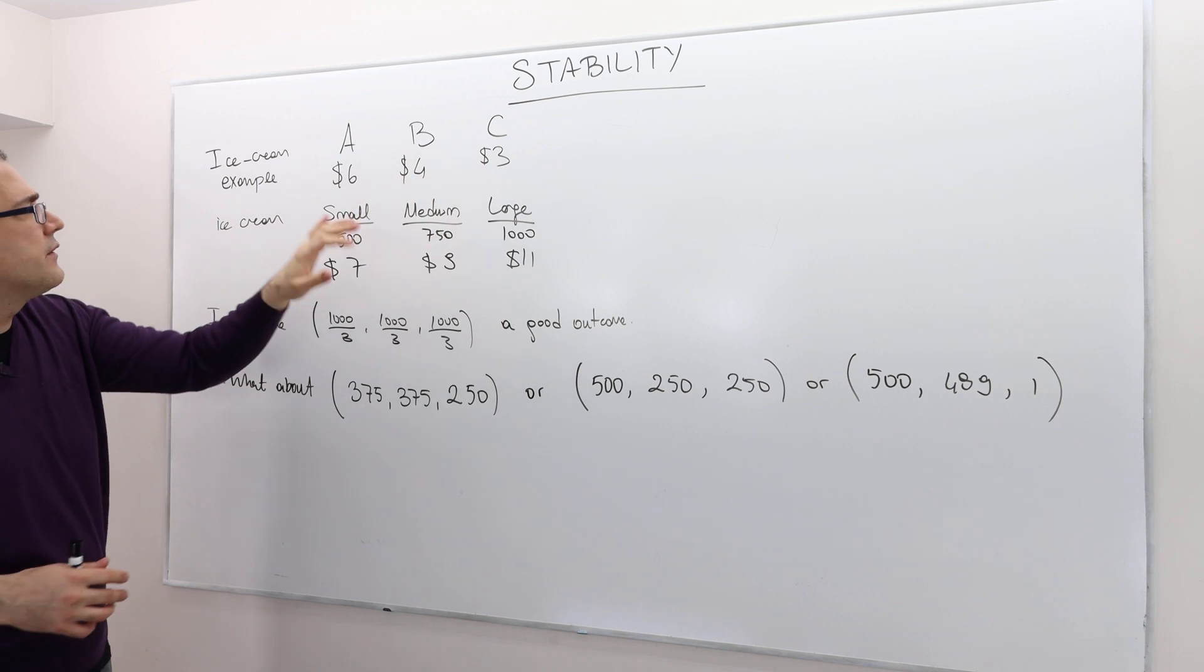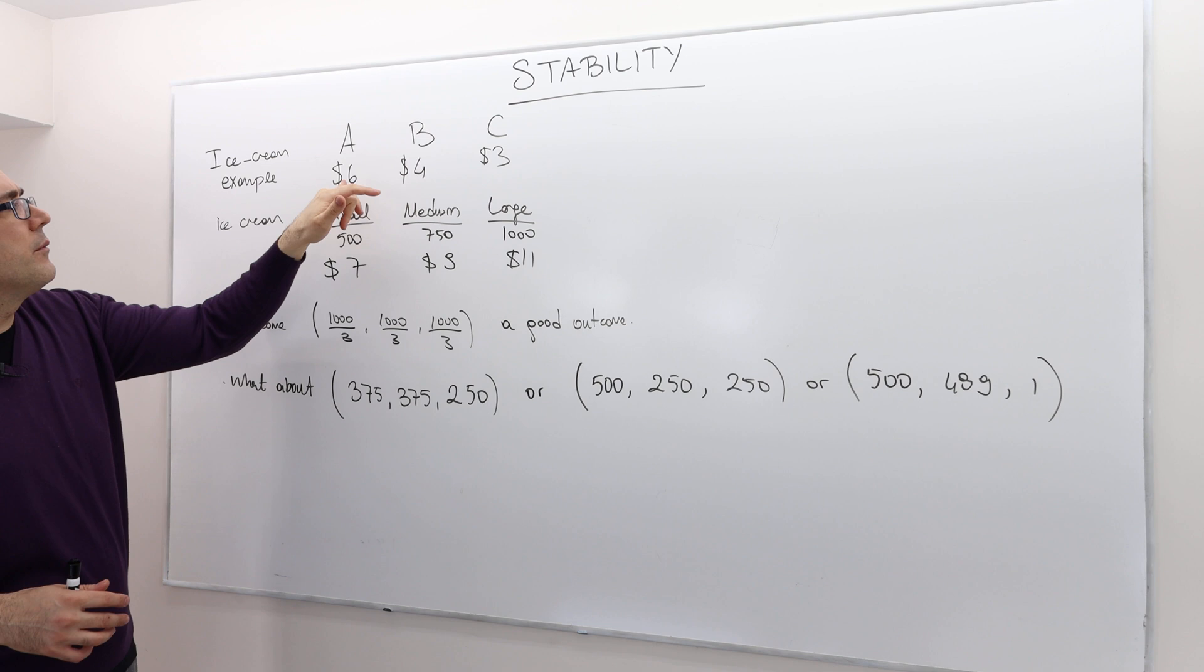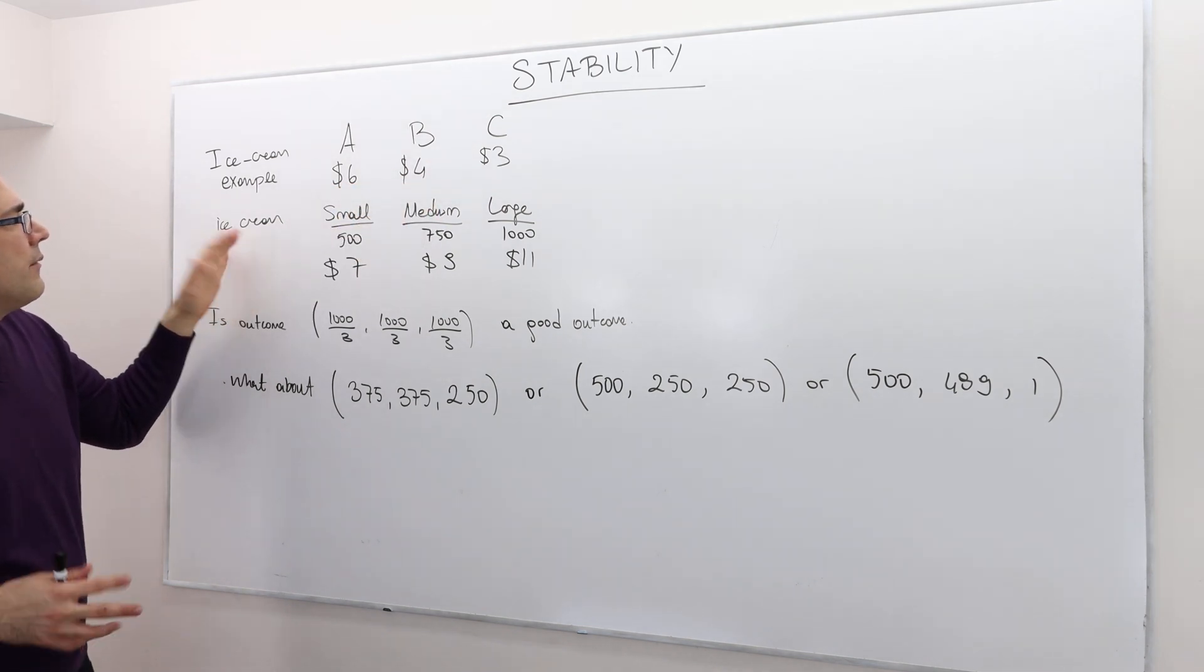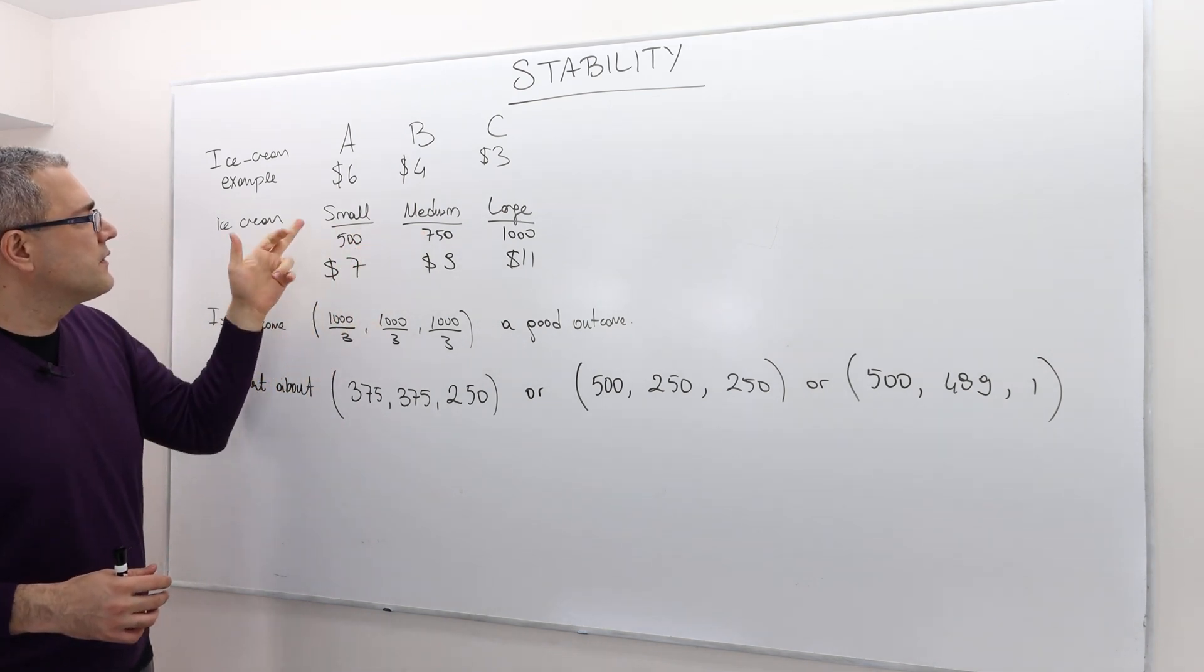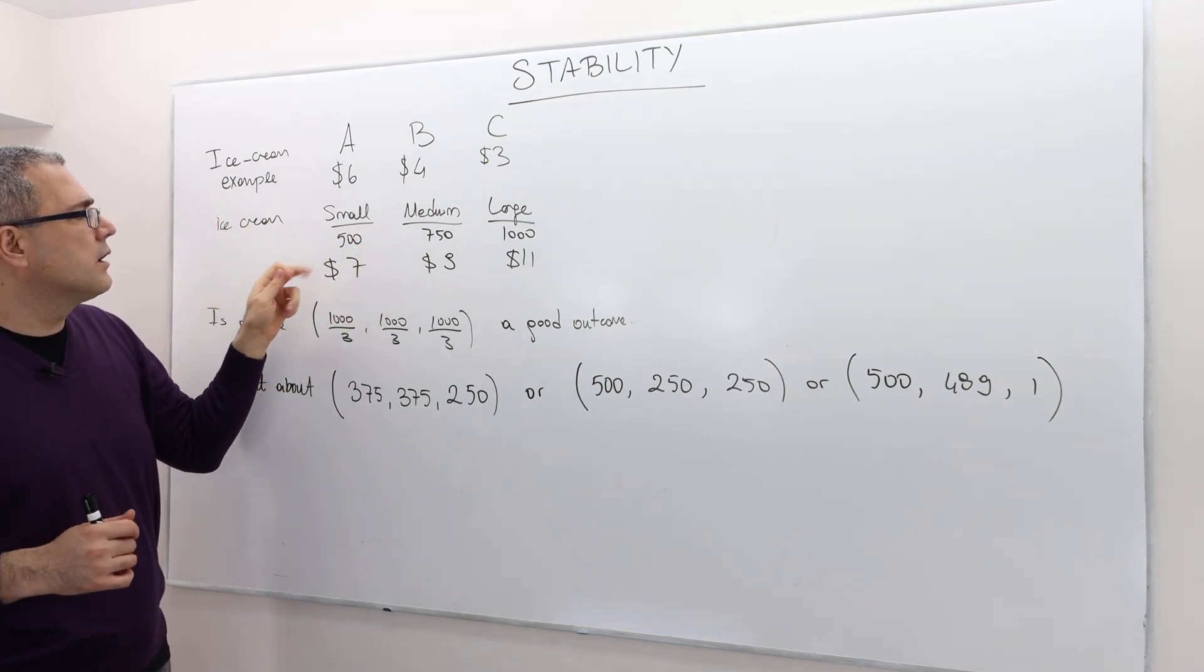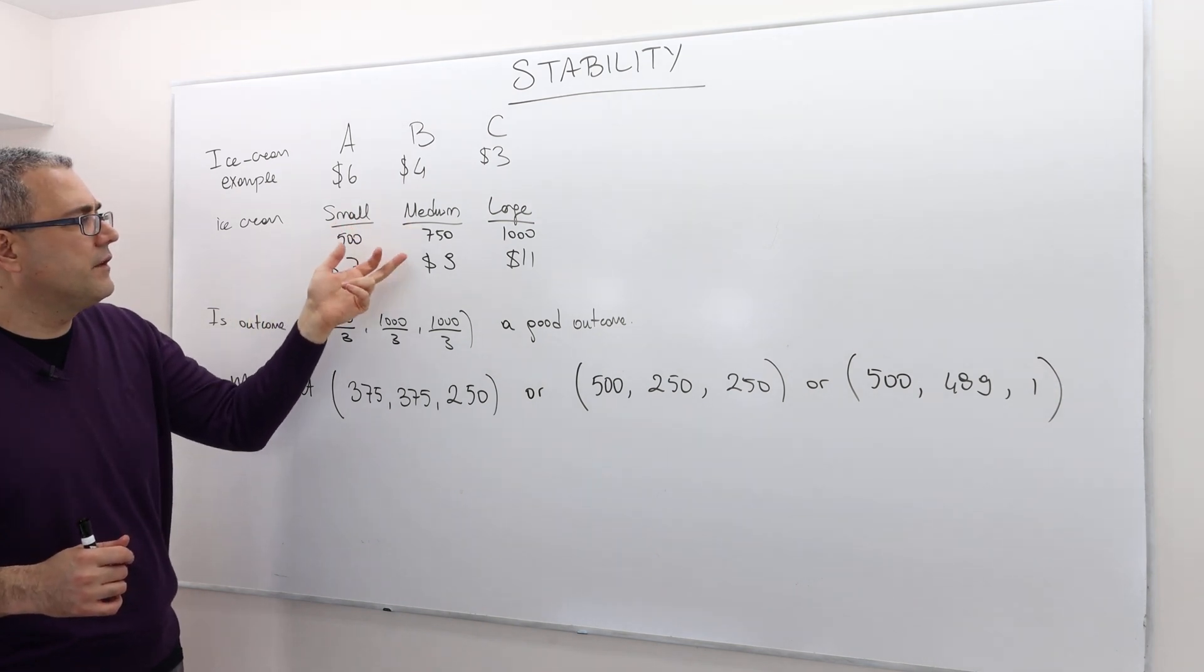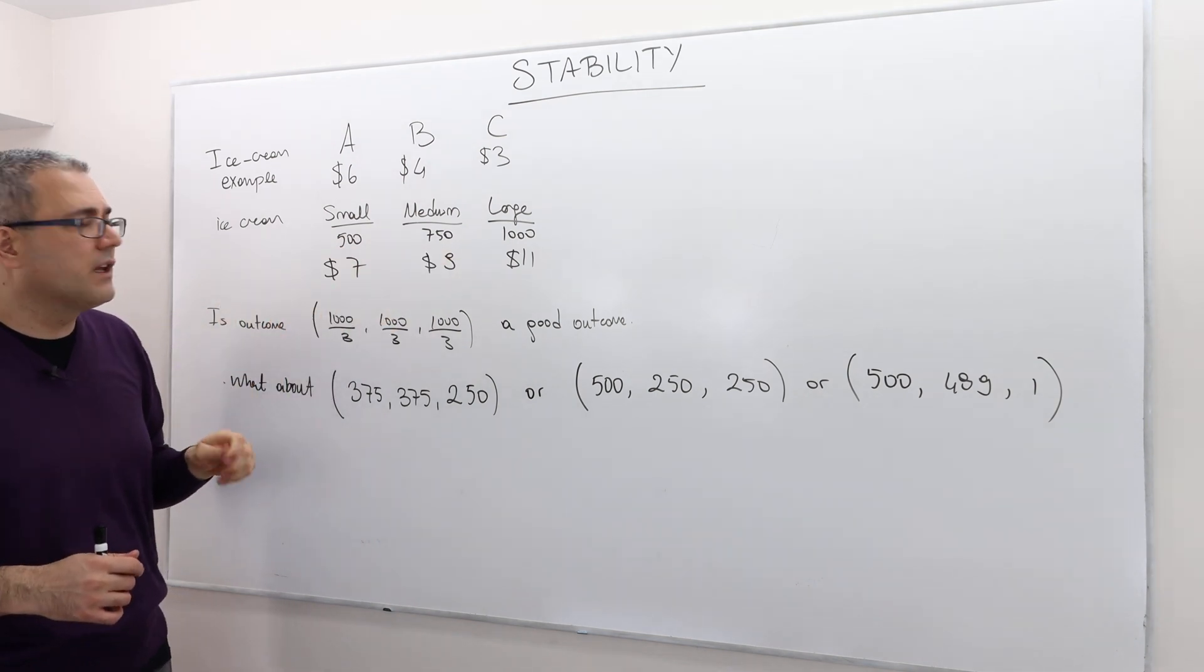So this is the ice cream example, if you remember. There are three kids, this is what they have, initial amount of money, player A, B and C have. And then they can buy one of those three ice creams. The small one is 500 grams but costs $7, medium is 750 grams, $9 and the large one is 1000 grams and costs $11.